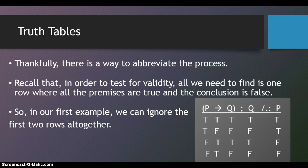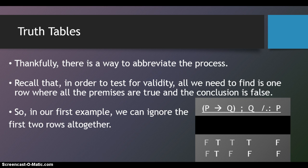So, in our first example, we could ignore the first two rows altogether. Their conclusions are true, so we're not interested in rows with true conclusions. We're interested in rows where all the premises are true and the conclusion is false.